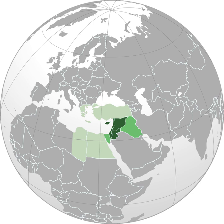In 1581, England set up the Levant Company to monopolize commerce with the Ottoman Empire. The name "Levant states" was used to refer to the French mandate over Syria and Lebanon after World War I. This is probably the reason why the term Levant has come to be used more specifically to refer to modern Syria, Lebanon, Palestine, Israel, Jordan, and Cyprus.